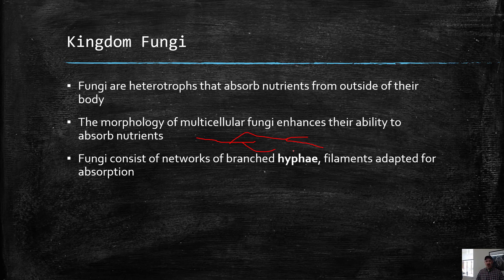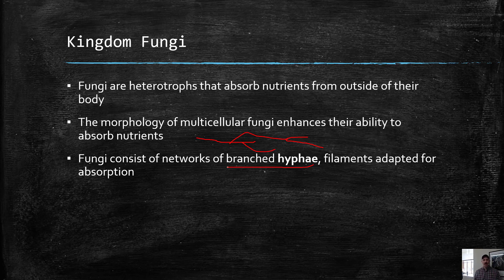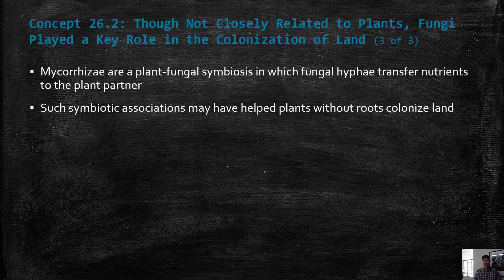These long strands are called hyphae. Even a mushroom, although you have to zoom in to see it, consists of branched hyphae — chains of cells that form long filaments adapted for absorption. Just like we have microvilli, these finger-like projections, fungi have a similar idea. Their body shape promotes absorption of nutrients.